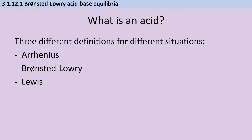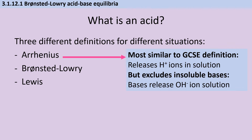You should know three different definitions for acids and bases, each of which gets steadily broader. The Arrhenius definition of an acid is most similar to the GCSE one: acids are substances that dissolve in water to release hydrogen ions. But the Arrhenius definition of a base is substances that release hydroxide ions in solution, and we'd recognize that as a definition for alkalis because it excludes insoluble bases like metal oxides and metal carbonates.